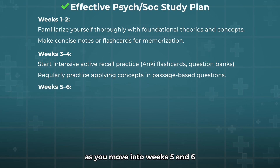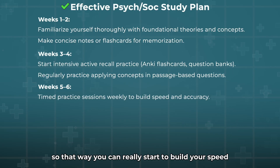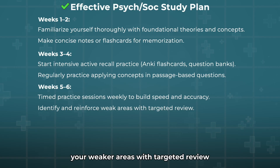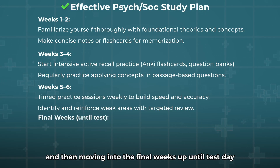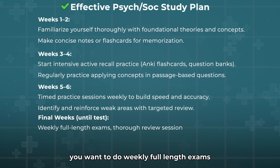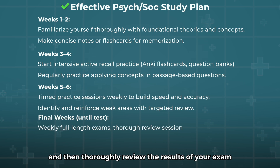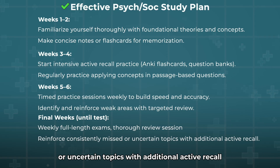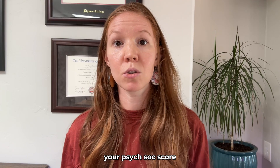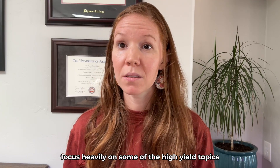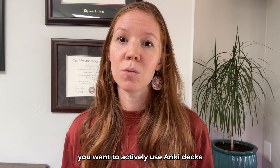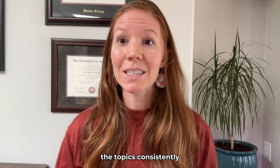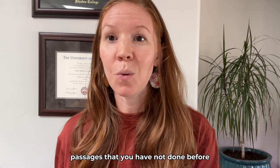As you move into weeks five and six, start doing timed practice sessions weekly so you can build your speed and accuracy going through passages. Identify and reinforce your weaker areas with targeted review. Moving into the final weeks up until test day, do weekly full-length exams and thoroughly review the results — both missed and correct questions. Reinforce consistently missed or uncertain topics with additional active recall. If you are looking to quickly improve your psych-soc score, focus heavily on the high-yield topics outlined earlier and actively use Anki decks or flashcards daily.